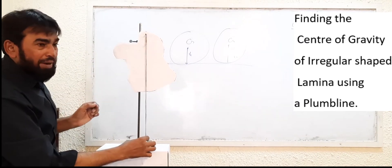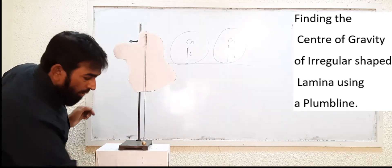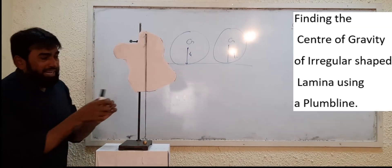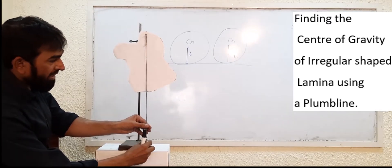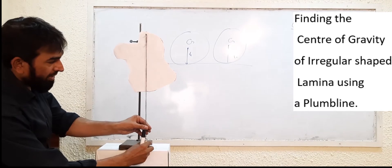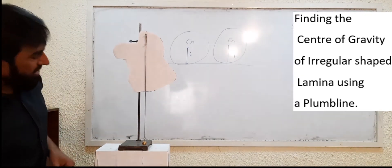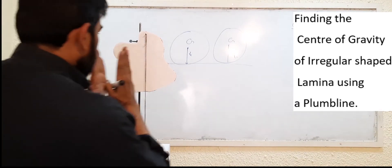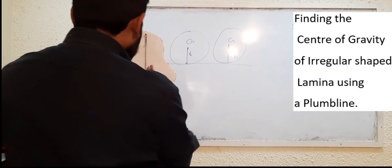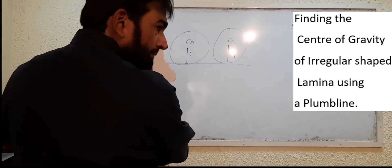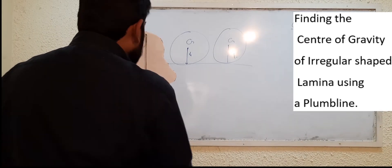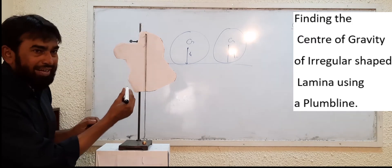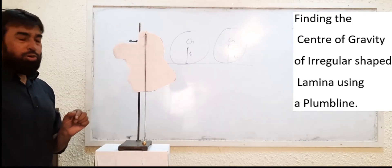Now, suspend the plumb line like this. You have to wait for it to stop moving, and then mark the position of the thread. You will have to look at it from the front to mark the position correctly.